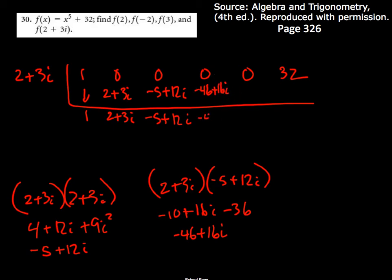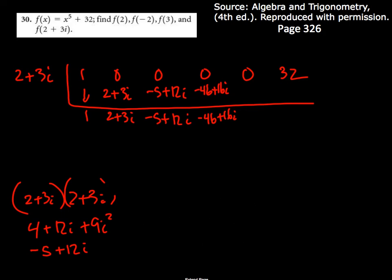Add minus 46 plus 16i. Now I'll multiply again. I need some room. I'm just going to erase some of these here. So this one times this one. So it's 2 plus 3i and minus 46 plus 16i.